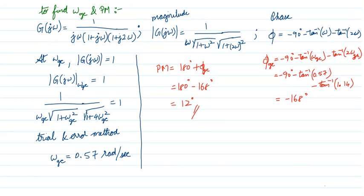To find the gain crossover frequency and phase margin: the magnitude of the transfer function is expressed in terms of ω, and for 1/(jω) the magnitude is 1/ω; for (1 + jω) it is √(1 + ω²). The phase angle: for 1/(jω) it is minus 90°; for (1 + jω) it is plus tan⁻¹(ω); for denominator terms, add a minus sign. For gain crossover frequency, set magnitude = 1. Using trial and error, you can find ω_gc.